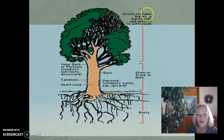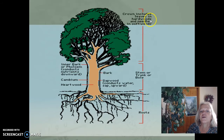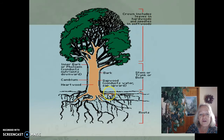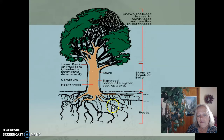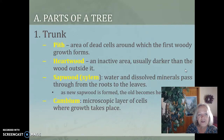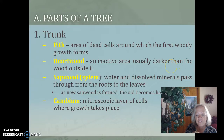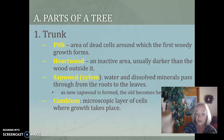The crown includes hardwood leaves and needles in softwoods. This is the crown, this is the bark. We're going to talk about the parts of the trunk now, and then the roots as well.